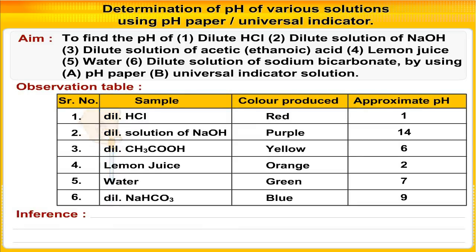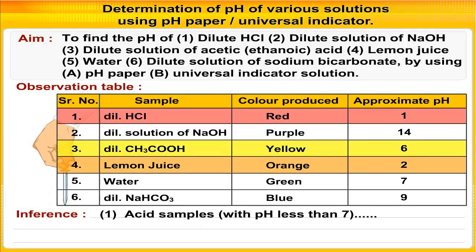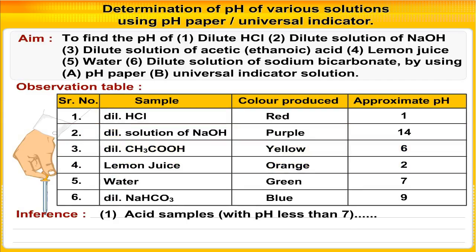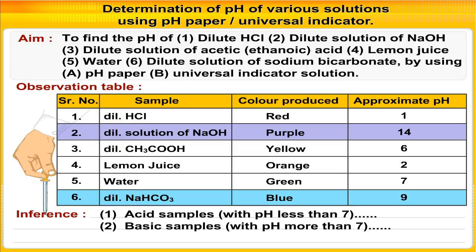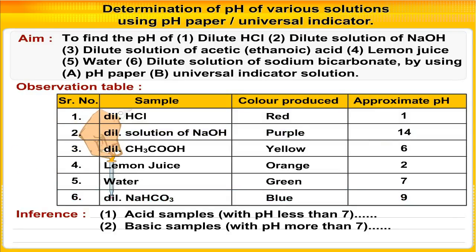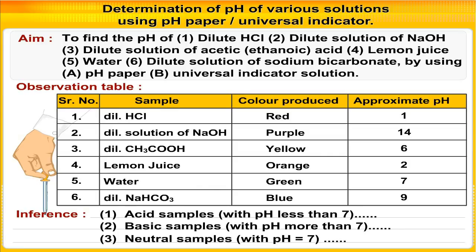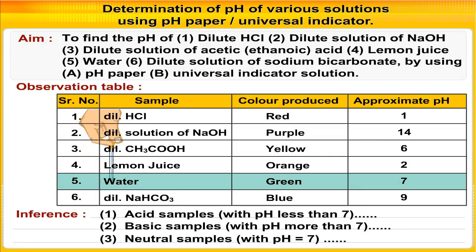Inference: Number 1 — acid samples have pH less than 7. Number 2 — basic samples have pH more than 7. Neutral samples have pH equal to 7.